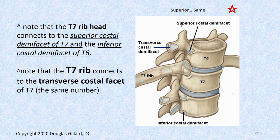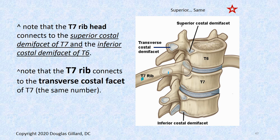Here's a see-through drawing showing the T7 rib connecting to T7 and T6 vertebrae. The superior costal demi-facet connects to its own same-number rib — so that's T7. But see how the rib also connects to T6: when looking at that inferior costal demi-facet, you increase the rib by one — it's the T7 rib, not T6. The transverse costal facet is also same-number: that's the T7 transverse process and the T7 rib.